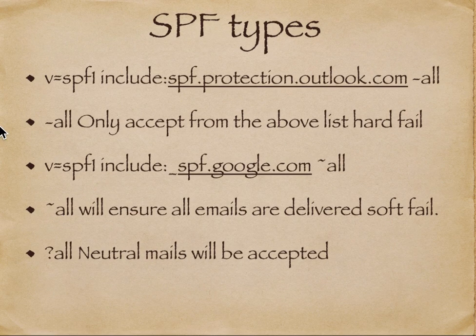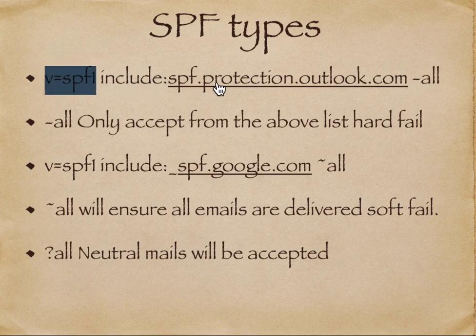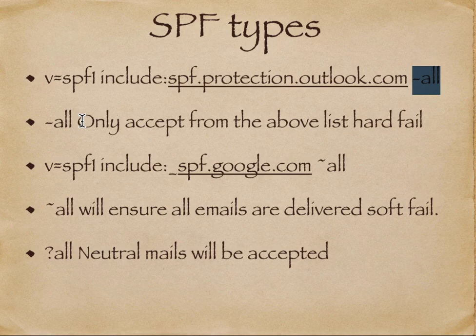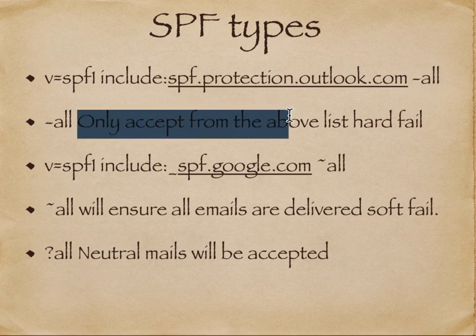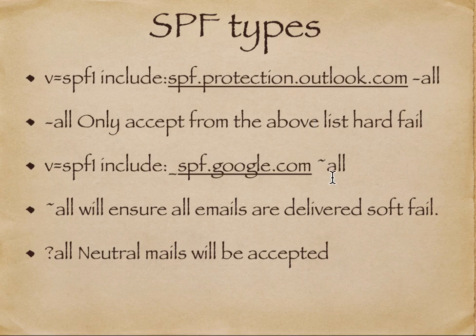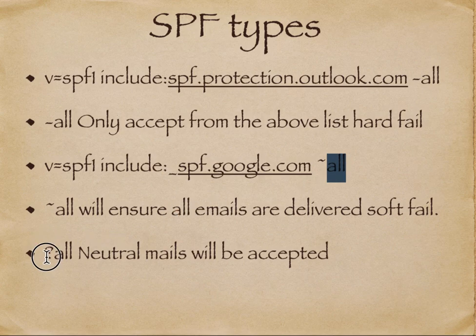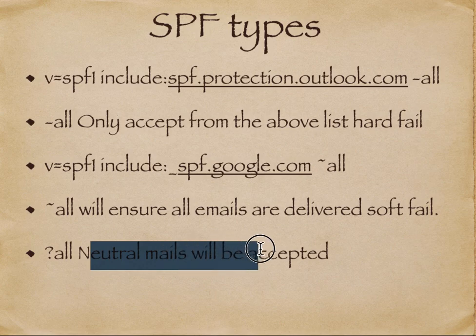The SPF record format looks like: v=spf1 include:<domain> -all. The 'v' stands for version (SPF version 1), and the include points to a pointer record. '-all' is a hard fail, meaning if the IP is not in the list, outright deny the email. A '~all' (tilde, the key above Tab) is a soft fail — the email is still accepted but marked as soft-failed. A '?all' (question mark) is neutral, and mails are still accepted.